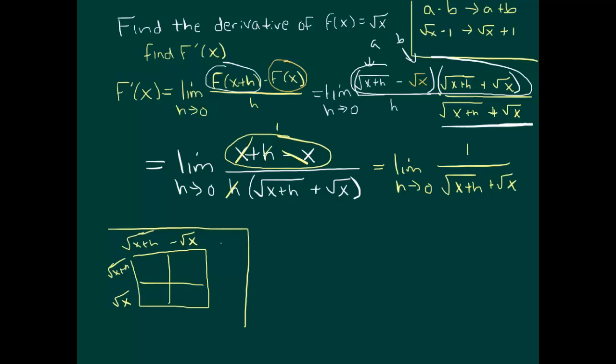And at this point, we can plug in 0 for h. And that turns this into 1 over square root of x plus 0 plus square root of x, and that's 1 over 2 square root of x. So the derivative of square root of x is 1 over 2 square root of x.